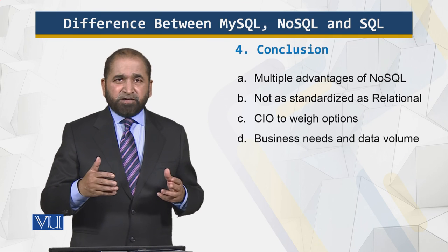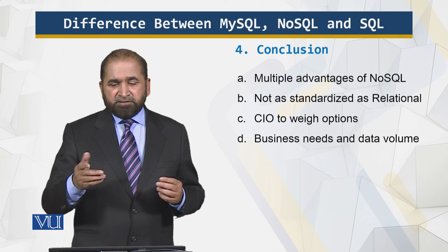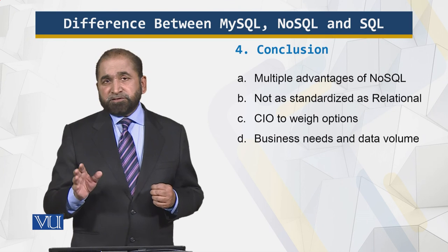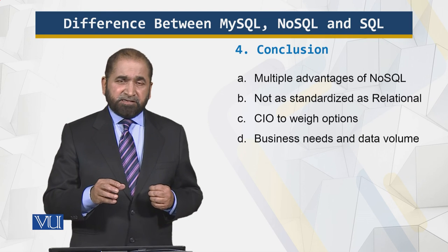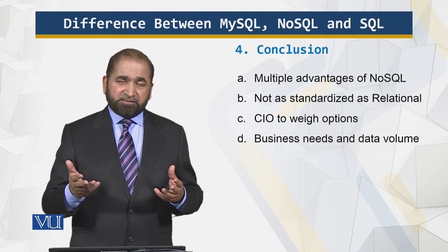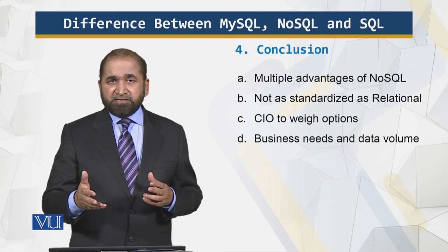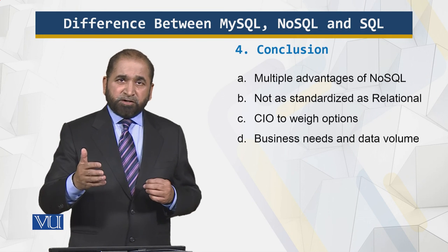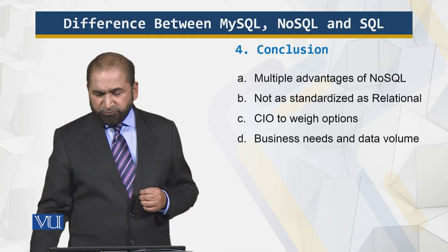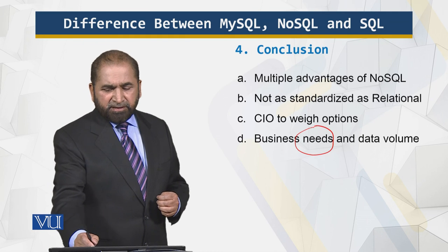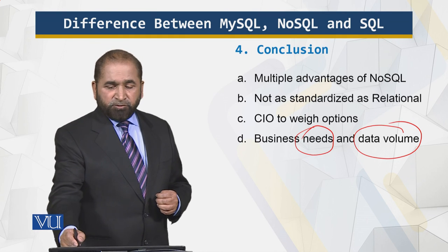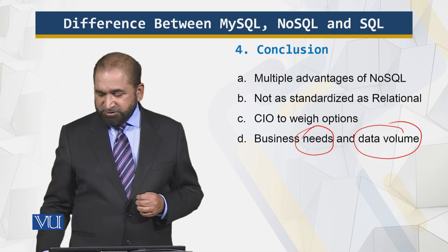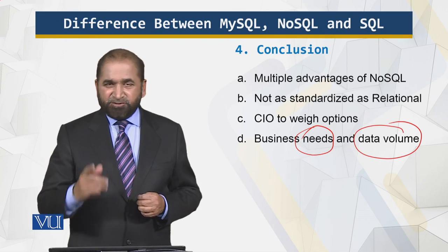The CIO — chief information officer — needs to look at the options, what functionality is needed, how much is needed, and how critical it is, then identify which model suits the organization. Finally, business needs and data volume are key factors. NoSQL is good for big data. That's all for this module — thank you for your time.